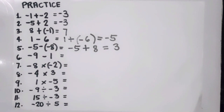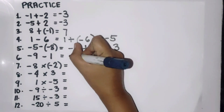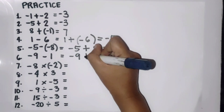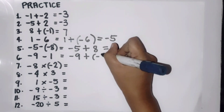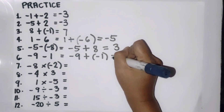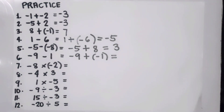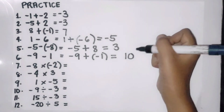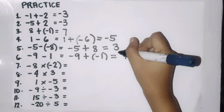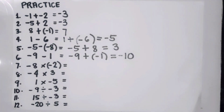Number six: negative nine minus one. Copy negative nine, proceed to addition, and change the sign of the second number. Since both are now negative — negative nine plus negative one — proceed to addition: nine plus one is ten. Copy their sign, which is negative. Therefore negative nine minus one is negative ten.